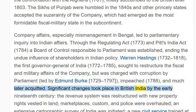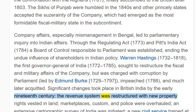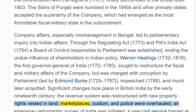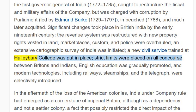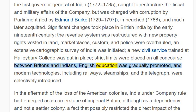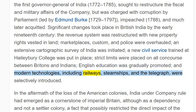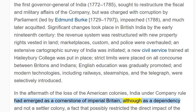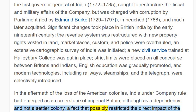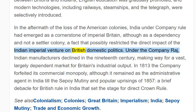Significant changes took place in British India by the early 19th century. The revenue system was restructured with new property rights vested in land; marketplaces, customs, and police were overhauled. An extensive cartographic survey of India was initiated. A new civil service, trained at Haileybury College, was put in place. Strict limits were placed on all intercourse between Britons and Indians; English education was gradually promoted; and modern technologies, including railways, steamships, and the telegraph, were selectively introduced. In the aftermath of the loss of the American colonies, India under company rule had emerged as a cornerstone of Imperial Britain, although as a dependency and not a settler colony.